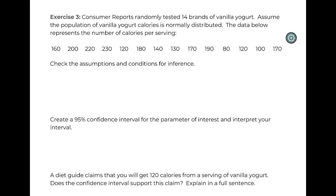All right, so another way this can go is instead of giving you the summary stats, I can give you the actual data. Exercise 3 shows that Consumer Reports randomly tested 14 brands of vanilla yogurt. Assume the population of vanilla yogurt is normally distributed, so they're letting us know we have that one assumption.